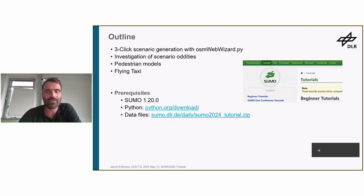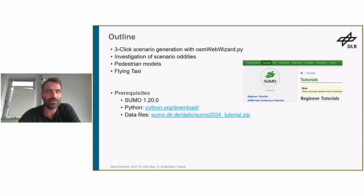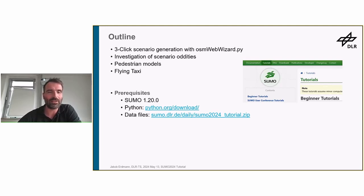The topics we'll be covering today are, as usual, something about OSM Web Wizard to get all of you started, especially the newer users. Then we'll talk about how to look at strange things that might happen during the simulation. We'll get a deeper look at some of the pedestrian models included in Sumo, especially the new ones. And for final fun, we'll be looking at flying taxis. To follow the tutorial, you'll be needing the latest Sumo release, which is version 1.20. You may also need Python, and the data files are in the link provided. You can find it also in the tutorial section on the Sumo documentation pages.